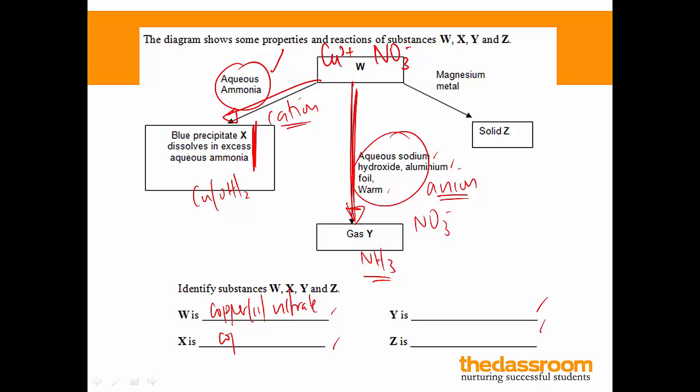X is copper 2-hydroxide. And finally, gas Y is ammonia gas. Now we are left with this reaction here, the addition of magnesium metal. Now, the addition of magnesium metal isn't to identify a cation or anion. This is really a displacement reaction. So it's a bit of a cross chapter. Magnesium is a more reactive metal than copper, and therefore copper will be displaced. So this is copper metal, which is reddish brown in color.